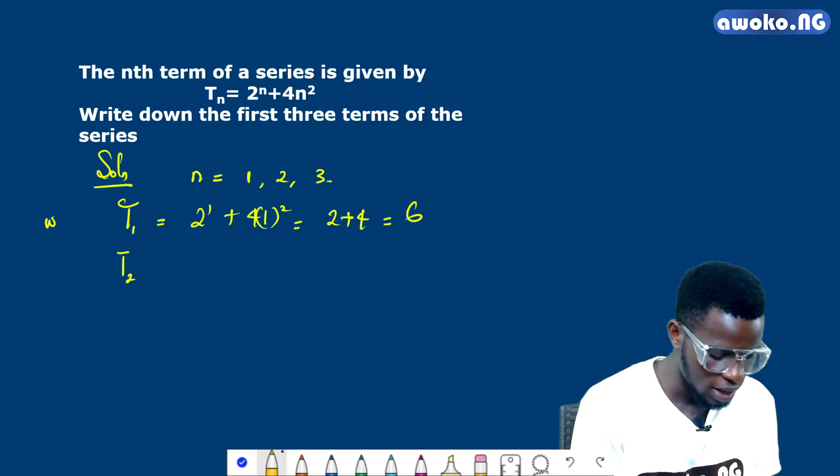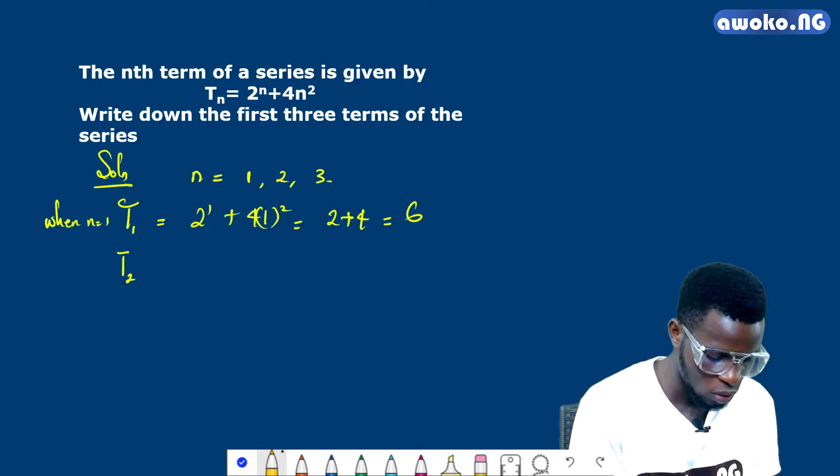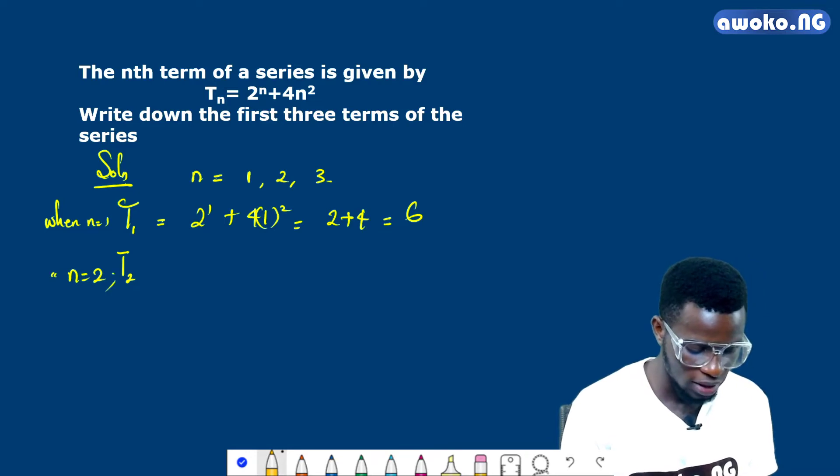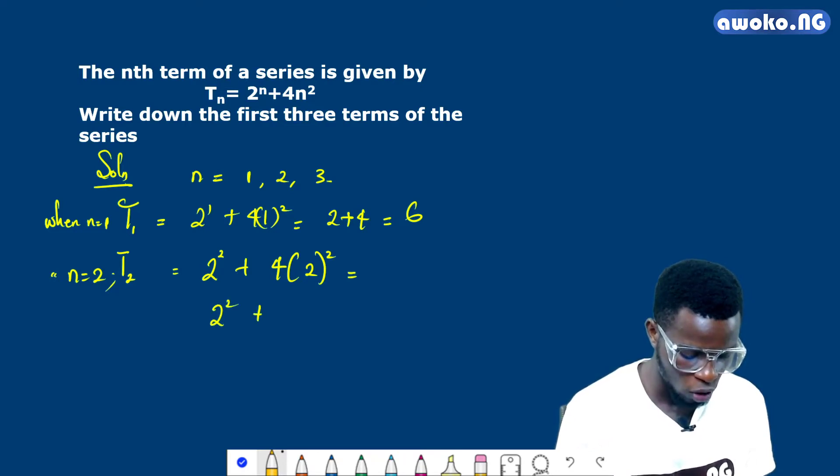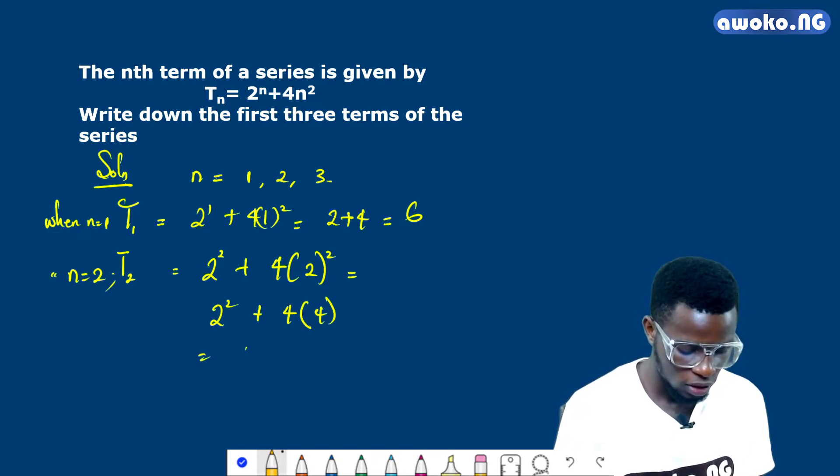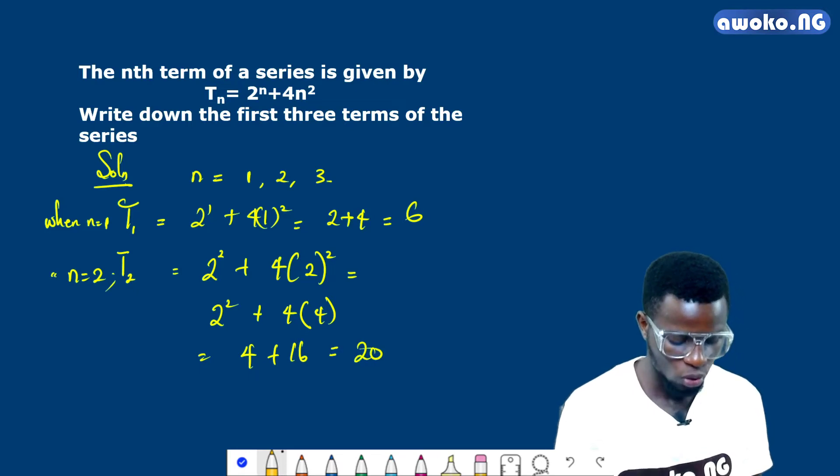Let us consider when n is equal to 1. When n equals 2, what then is our value? We have 2 raised to the power of 2 plus 4 into 2 squared. And this gives us 2 raised to the power of 2, which is 4. 2 raised to the power of 2 plus 4 into 4. So this is 4 plus 16, and this is 20.